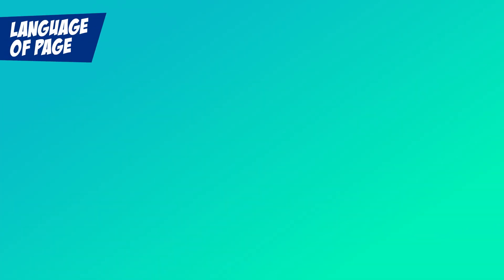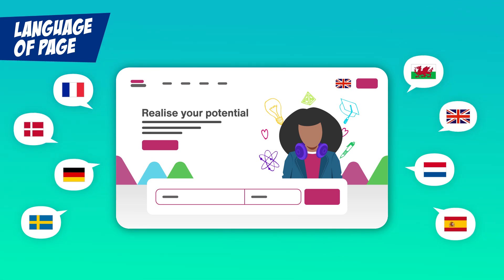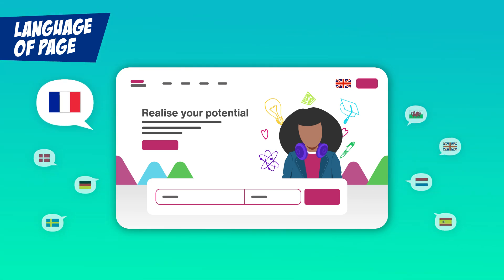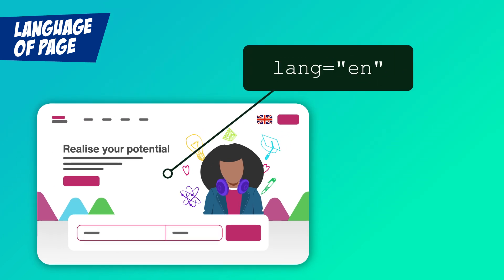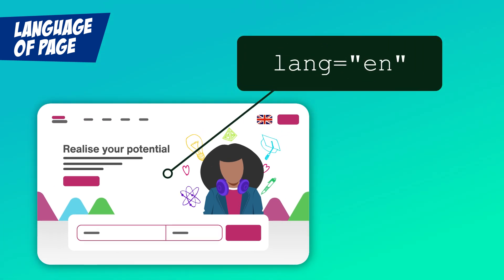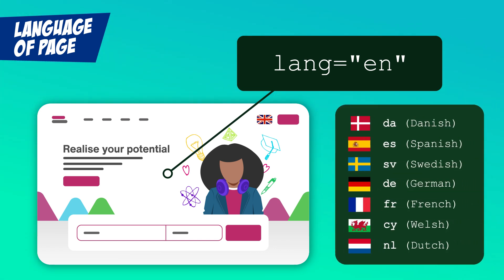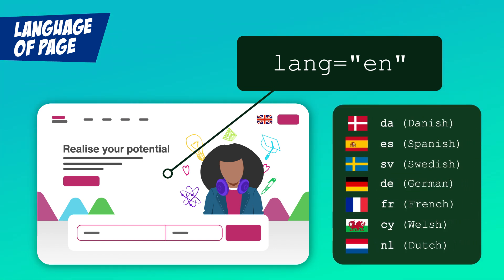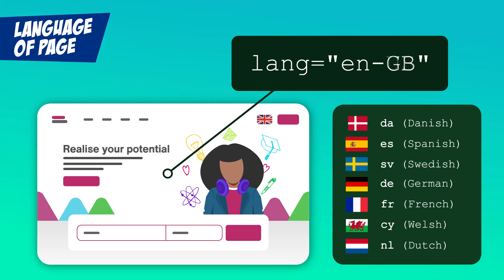Language of Page. Did you know that screen readers can speak many languages? It matters because you don't want your English content sounding like it's being read in French, putting the accent on the wrong syllable and making no sense at all. This is why it's important to use the lang attribute in your HTML tag to define the language of the page. Don't just make up language codes — there's a list of two-letter ISO language codes from the International Organization for Standardization. For example, EN is for English, which is usually enough for a screen reader. But there are also regional variants like EN-GB for British English or EN-US for American English, if you need to specify. This setting applies to the entire page and it's a level A requirement, different from Language of Parts, level AA, which we'll cover next.